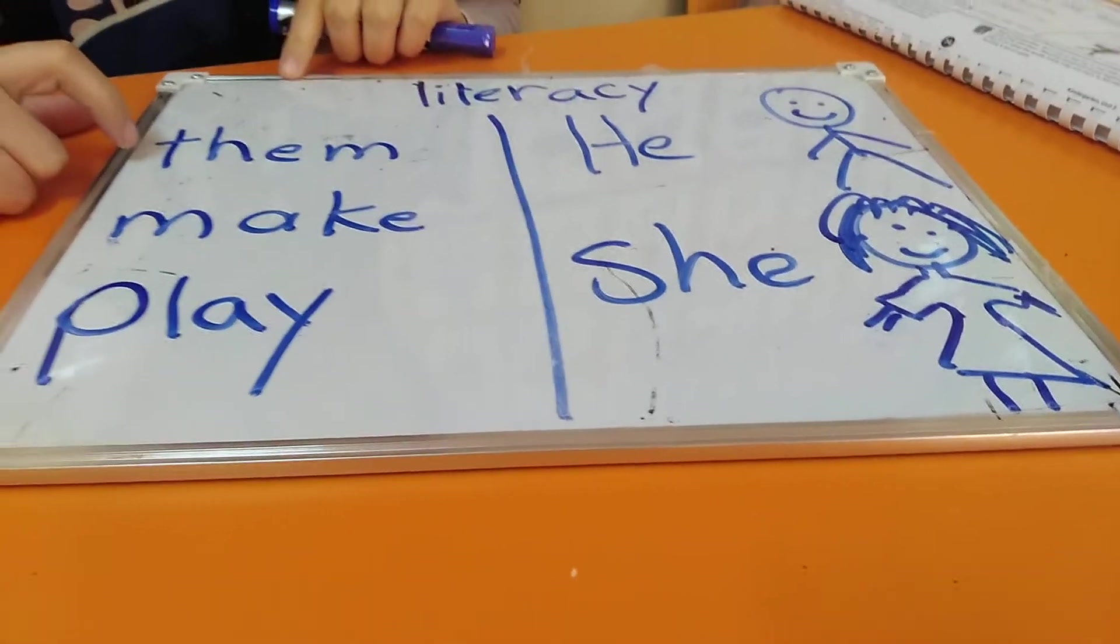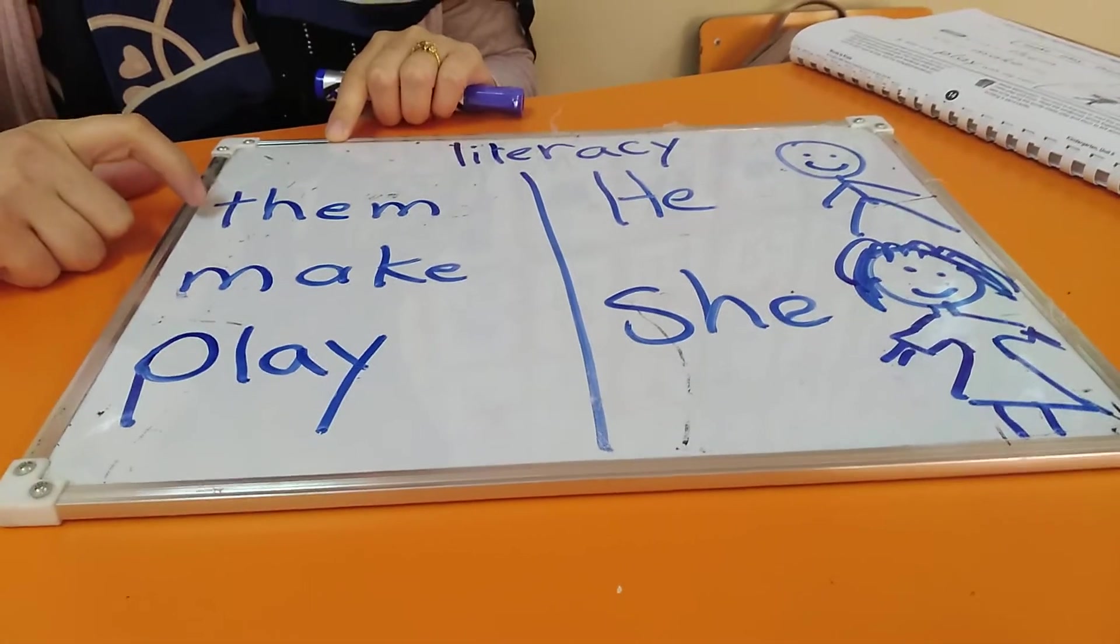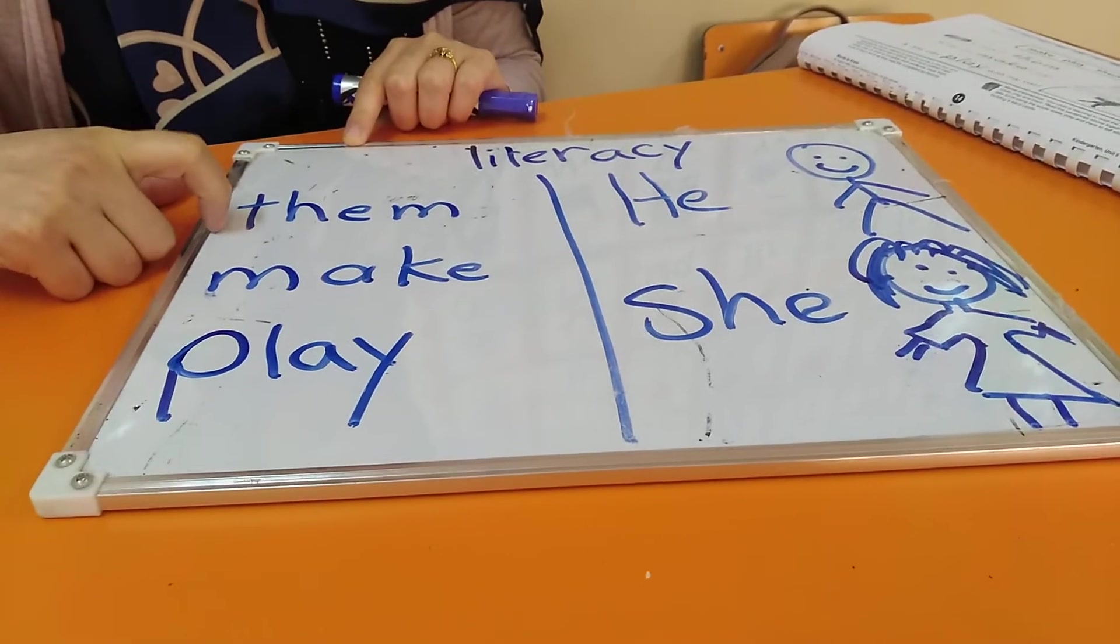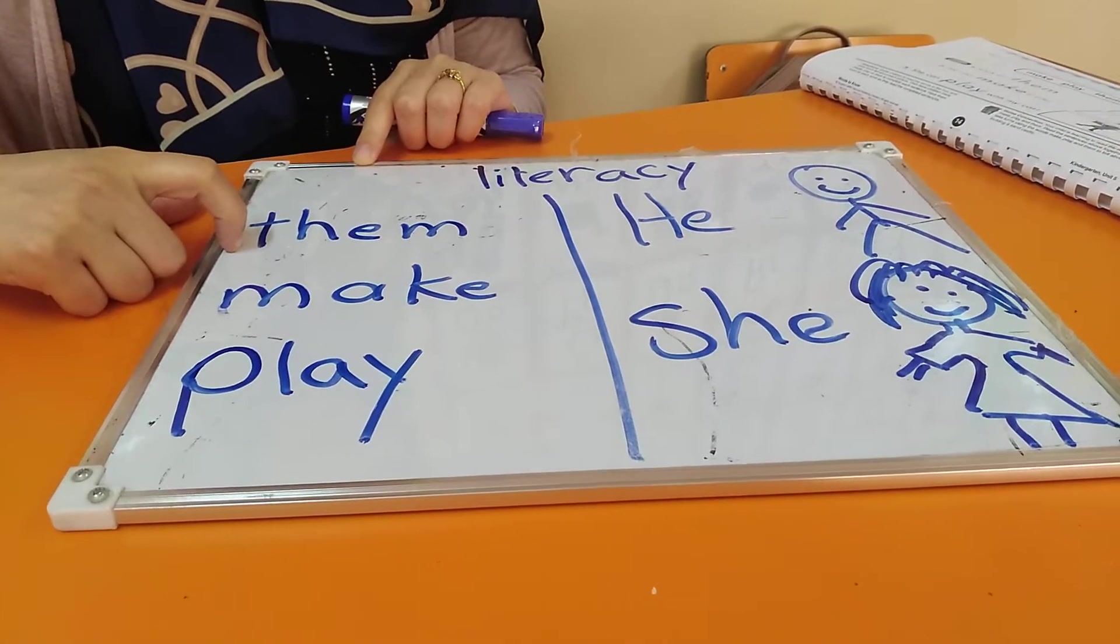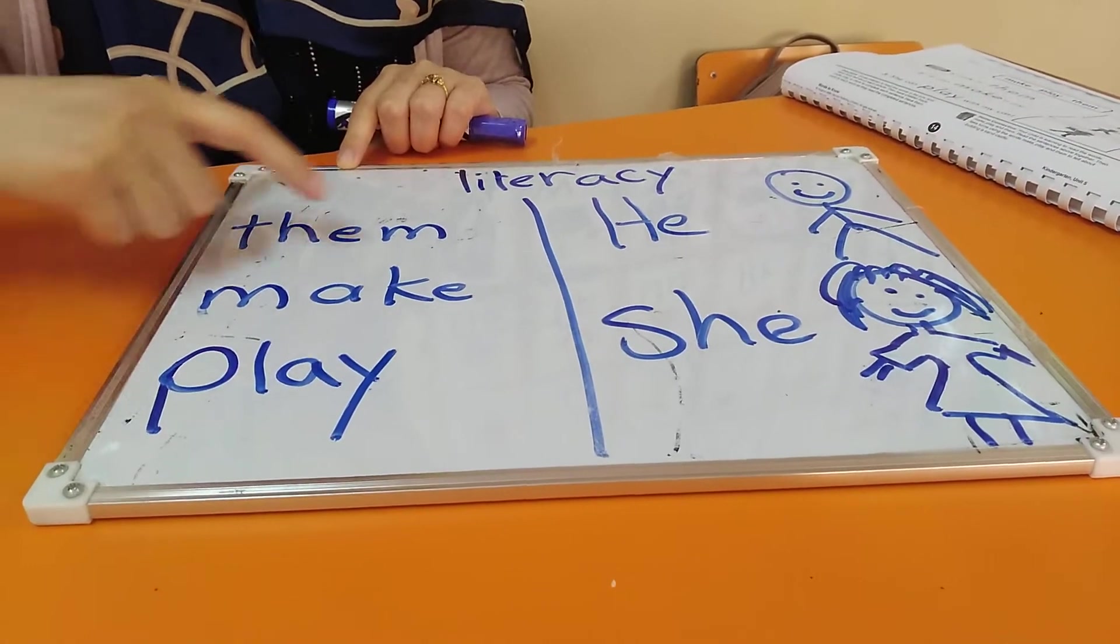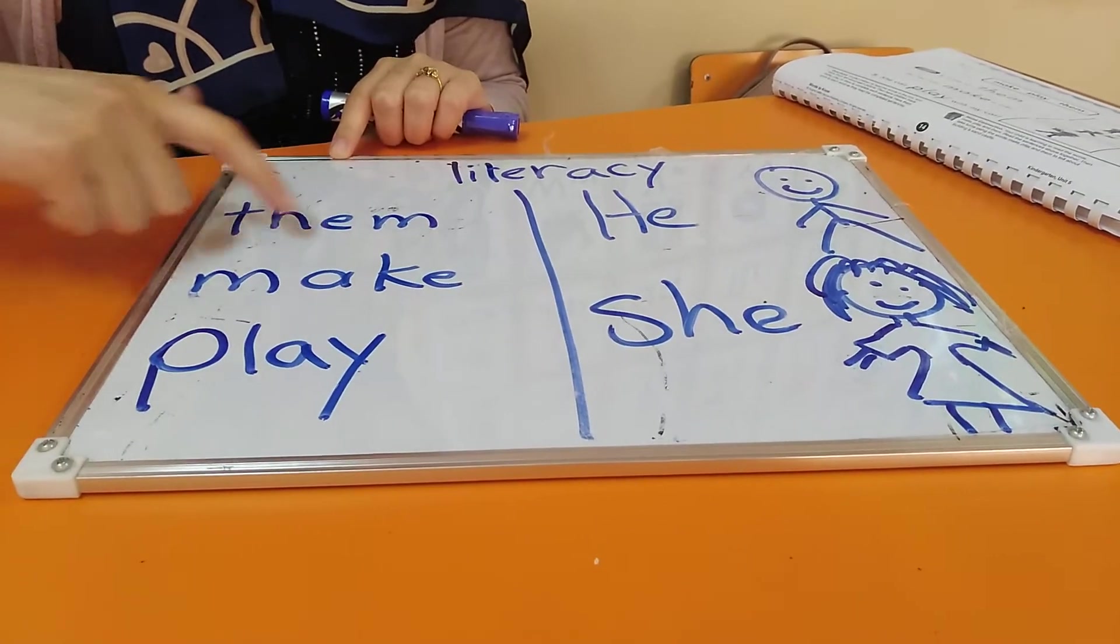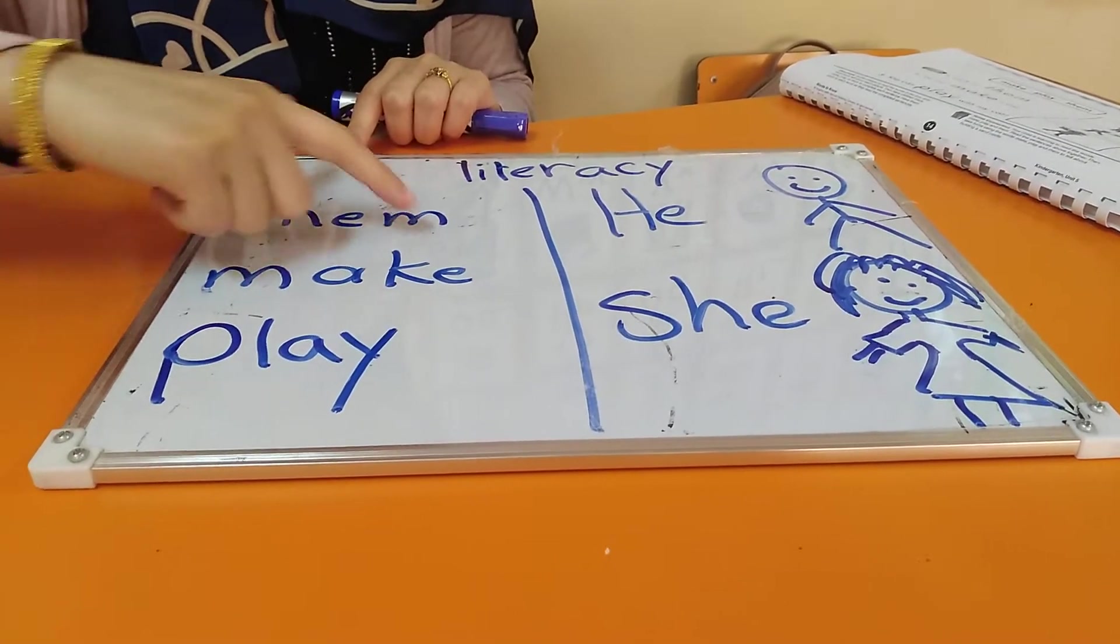First, what can you see here? TH. When I see the TH, what do I do? I get out of my tongue. TH. Them. Let's read. Them. Them.